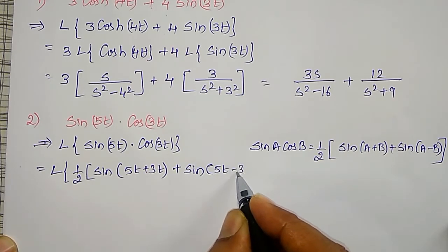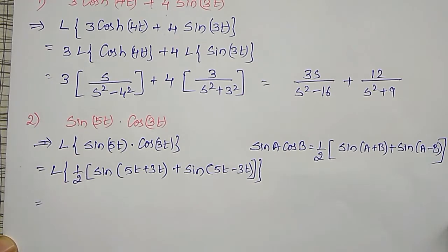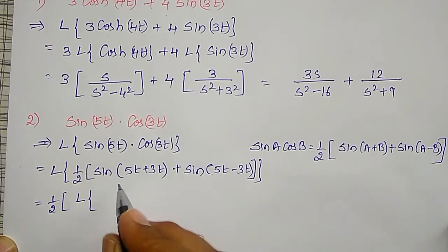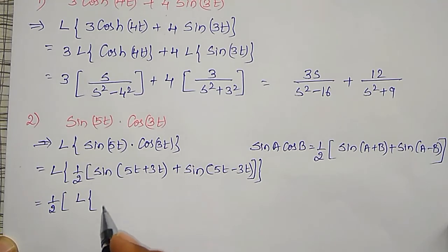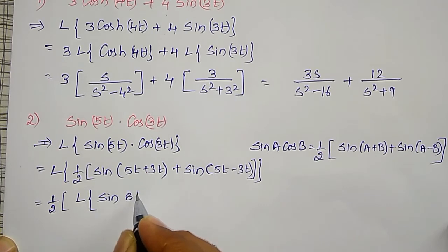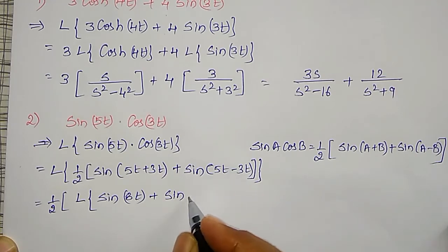Applying the formula, sin(5t)·cos(3t) becomes the Laplace transform of 1/2 times [sin(8t) plus sin(5t minus 3t)], giving sin(8t) plus sin(2t). Now it is an addition of trigonometric terms and separate Laplace transforms can be found using the linear property.